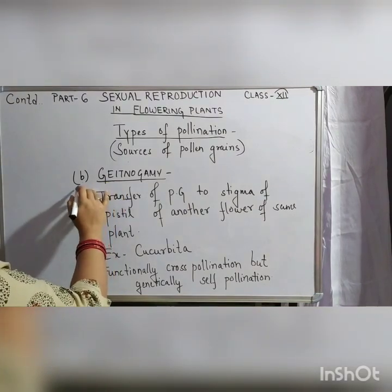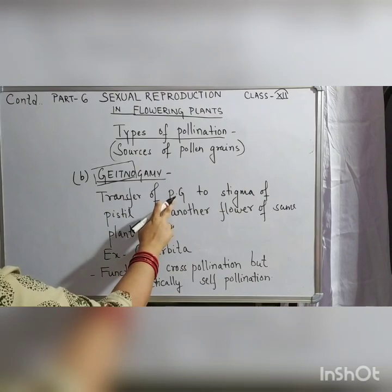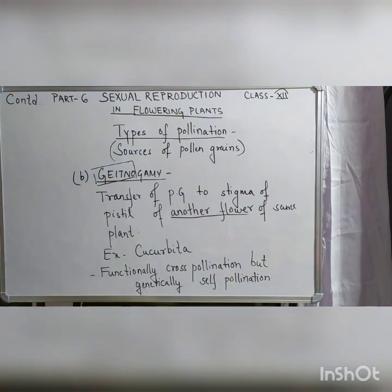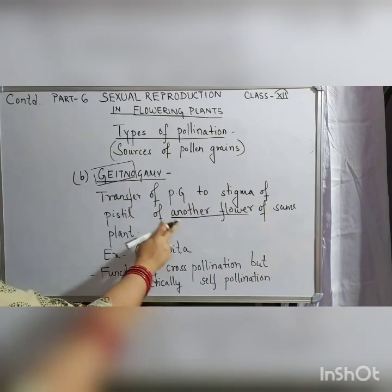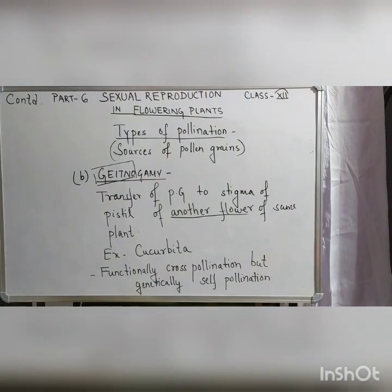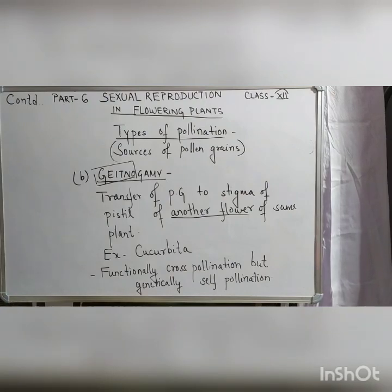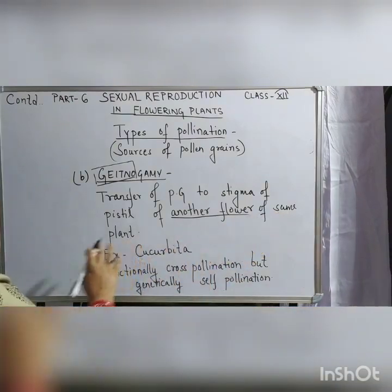The second type of pollination is geitonogamy. 'Geitono' means another. It is the transfer of pollen grains to the stigma of the pistil of another flower of the same plant. While autogamy was the same flower of the same plant, geitonogamy involves a different flower of the same plant. Example is Cucurbita — the cucumber family. It is functionally cross pollination but genetically self pollination, since it takes place within the same plant.